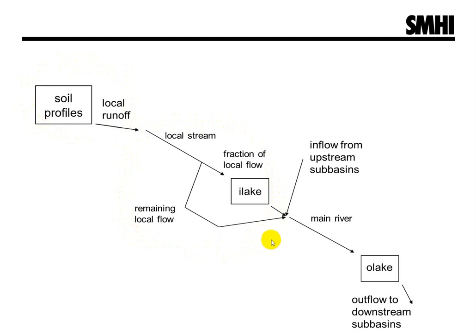The local flow then feeds into the regional routing that connects sub-basins. The routing consists of main rivers and possibly outlet lakes — O-lakes. The local flow enters the main river of its sub-basin together with flow from upstream sub-basins. The flow from the main river becomes inflow to the outlet lake, or in case of no lake, it goes directly to the next sub-basin.